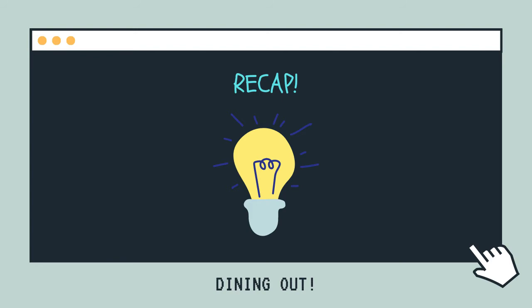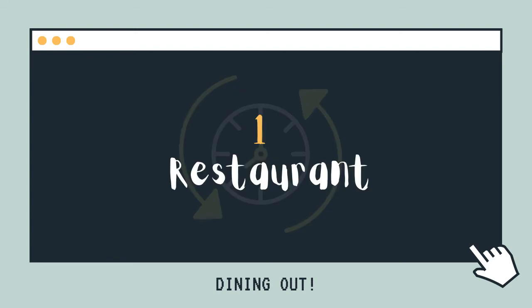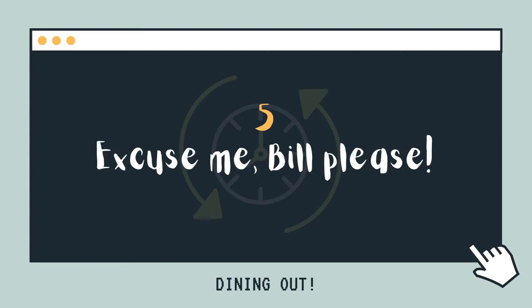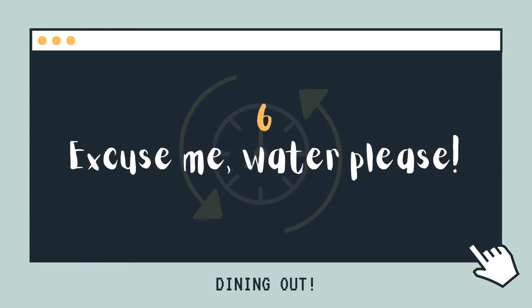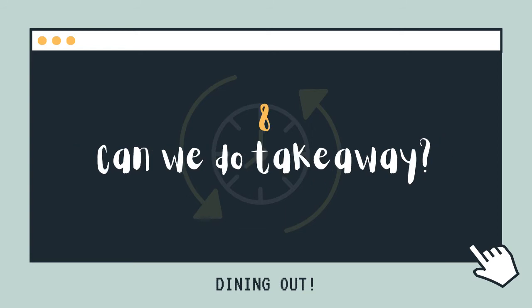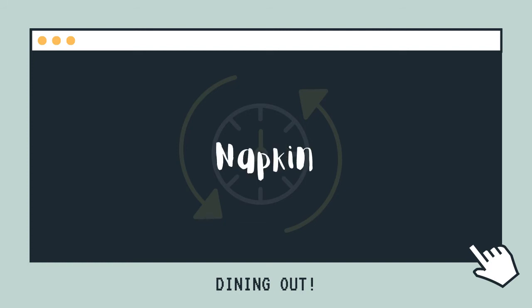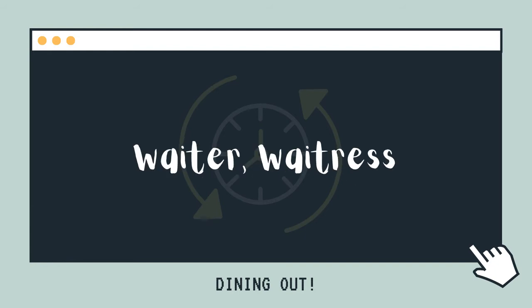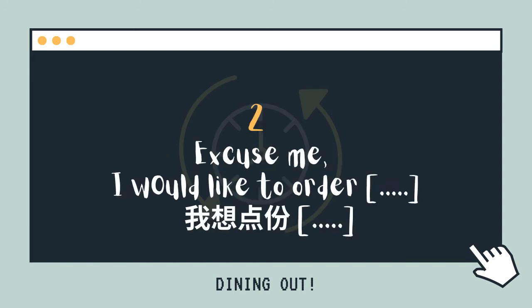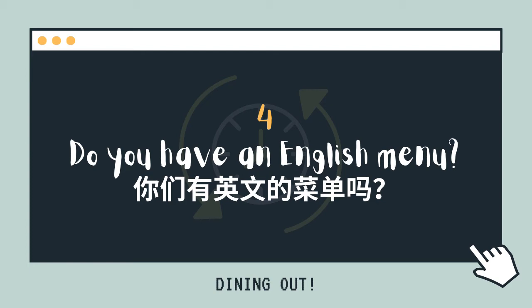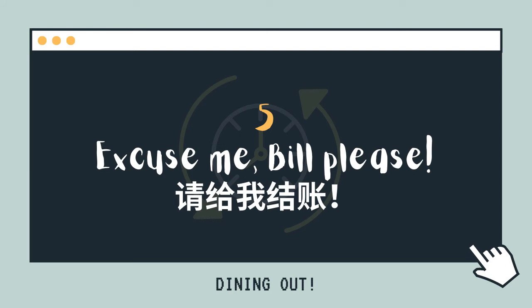Recap time! Can you remember these phrases and vocabulary in Mandarin? 餐廳 — restaurant. Excuse me, I would like to order — 我想點份. Do you accept credit cards? — 你們收信用卡嗎? Do you have an English menu? — 你們有英文的菜單嗎? Excuse me, bill please — 請給我結帳.